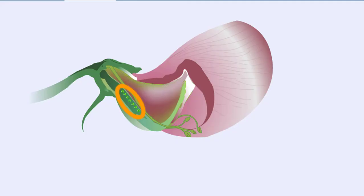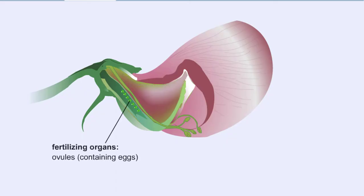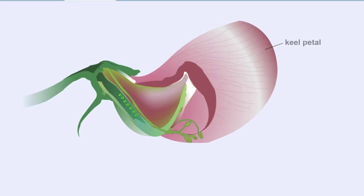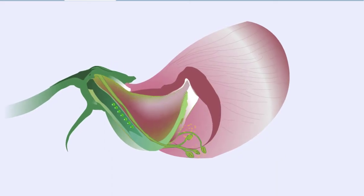The flower structure of the pea ensures that self-fertilization occurs. The fertilizing organs — the female stigma and the male anther — are tightly packed inside a modified petal called the keel petal. The anthers open within the flower bud and release pollen, which coats the female stigma. No foreign pollen can enter, thus enforcing self-fertilization.